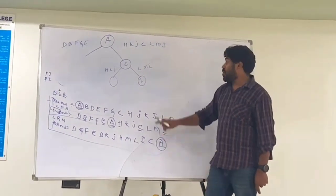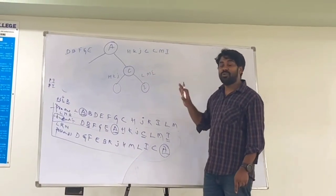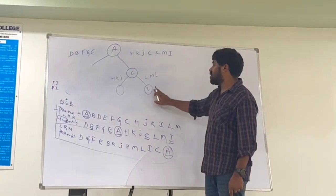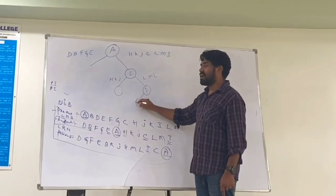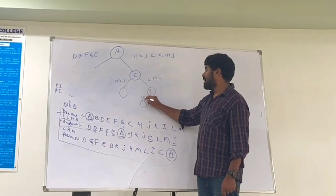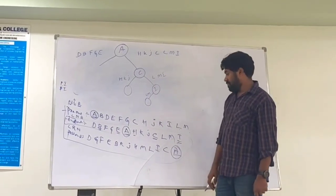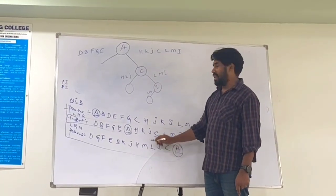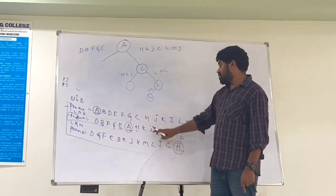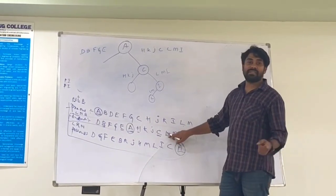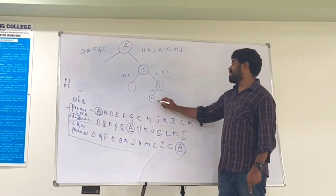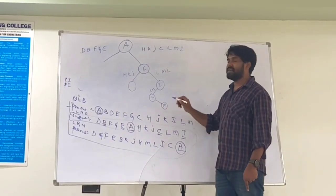Now for I, who will be on the left and right hand side? I's left side has no one. Right hand side has L and M. Who is coming first in post-order among L, M? To understand this, L comes first. I'll write L, then M. Now in in-order, M is on the right hand side, so I'll write M on the right.